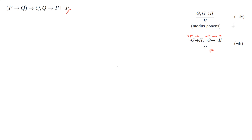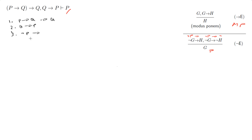And by the way, modus ponens will also help us solve this. So, line number one, I'm going to get the data out: P implies Q. Then line number two, Q implies P. And then line number three, I need to set up not P implies something, and not P implies not something.